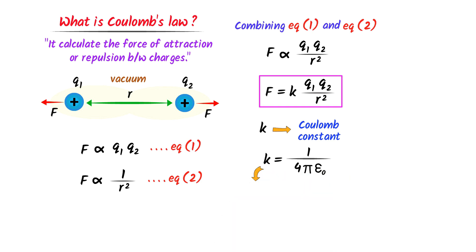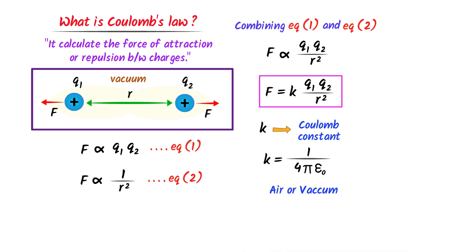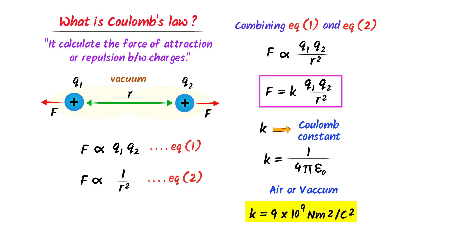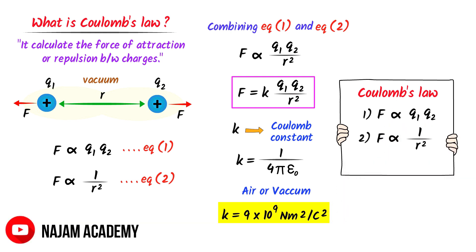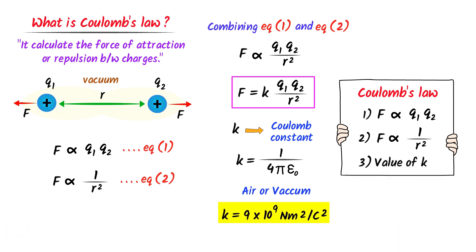Coulomb's law depends on three factors: the product of magnitude of charge, the square of distance between charges, and the medium k in which charges are kept. Note down all these important points.